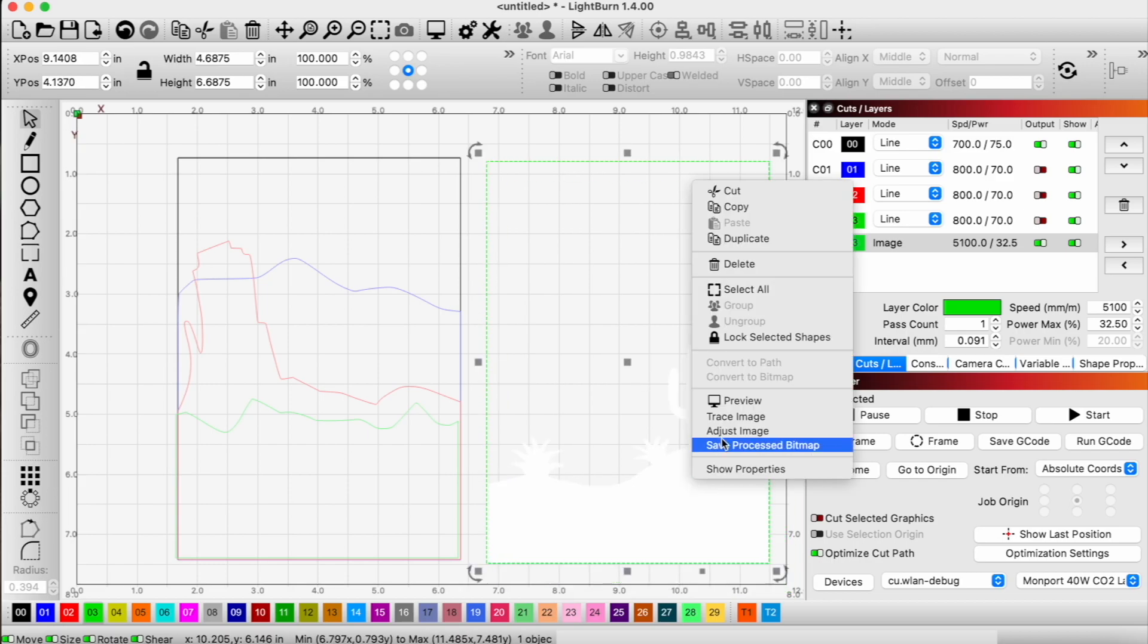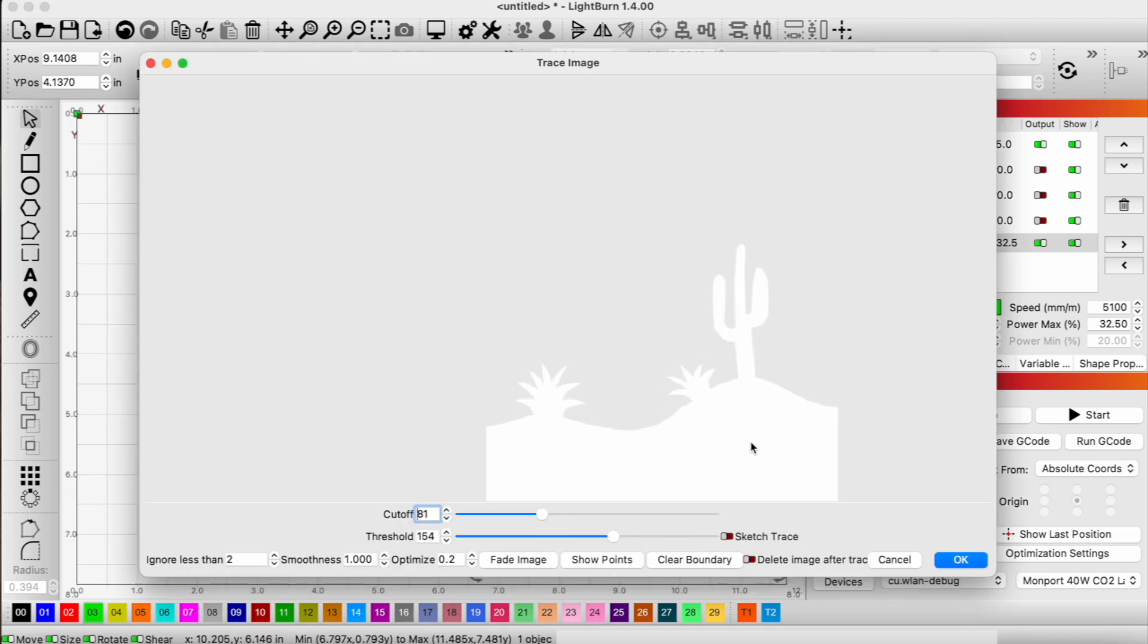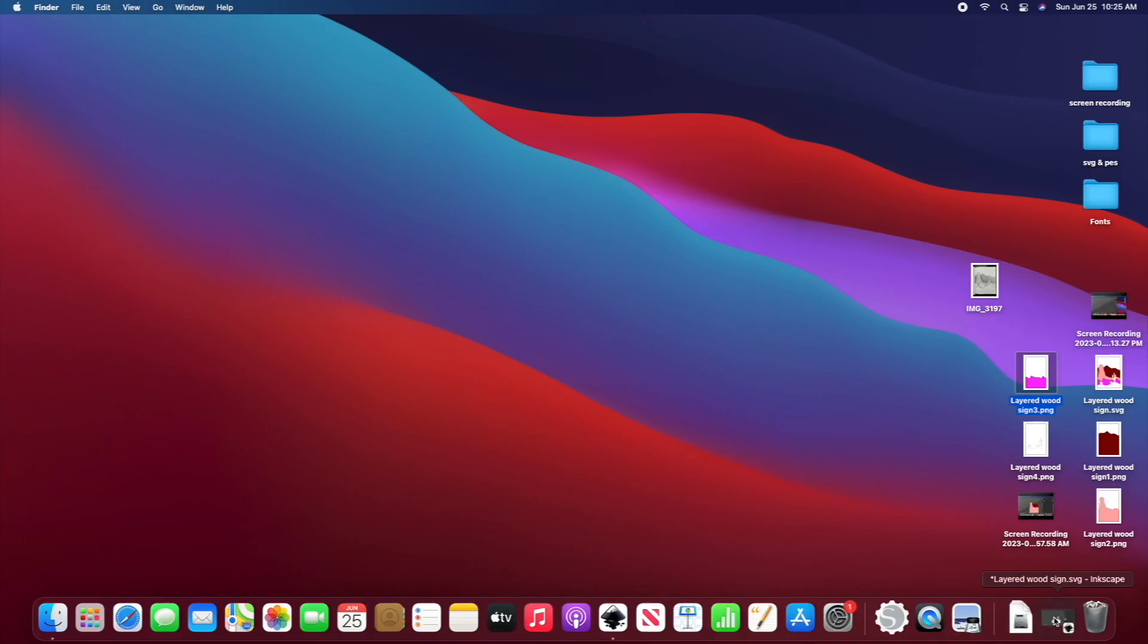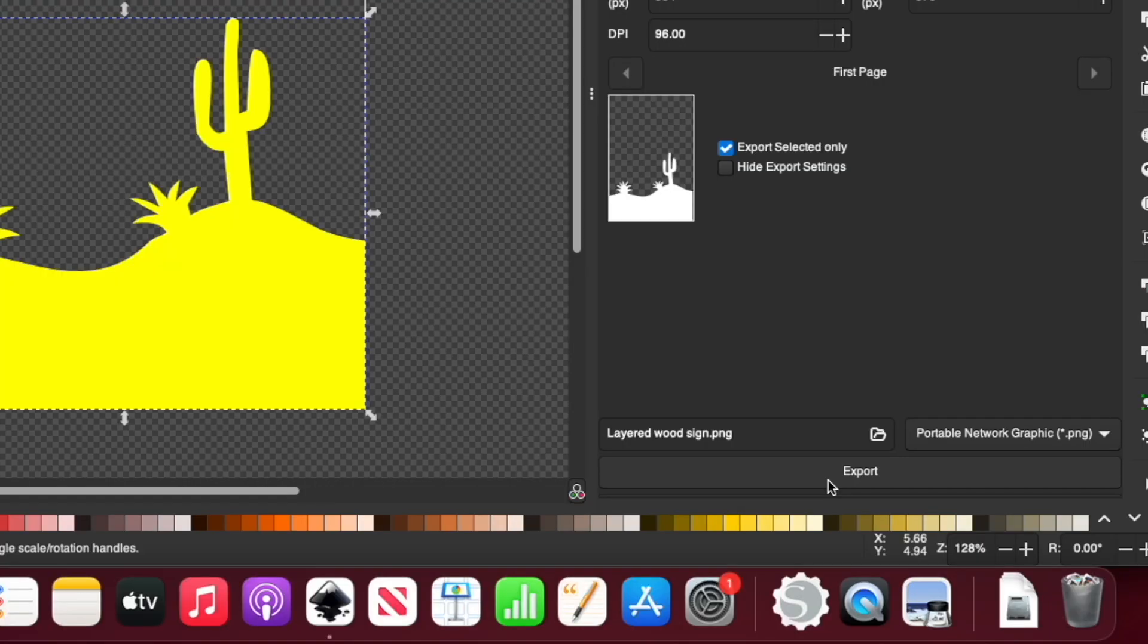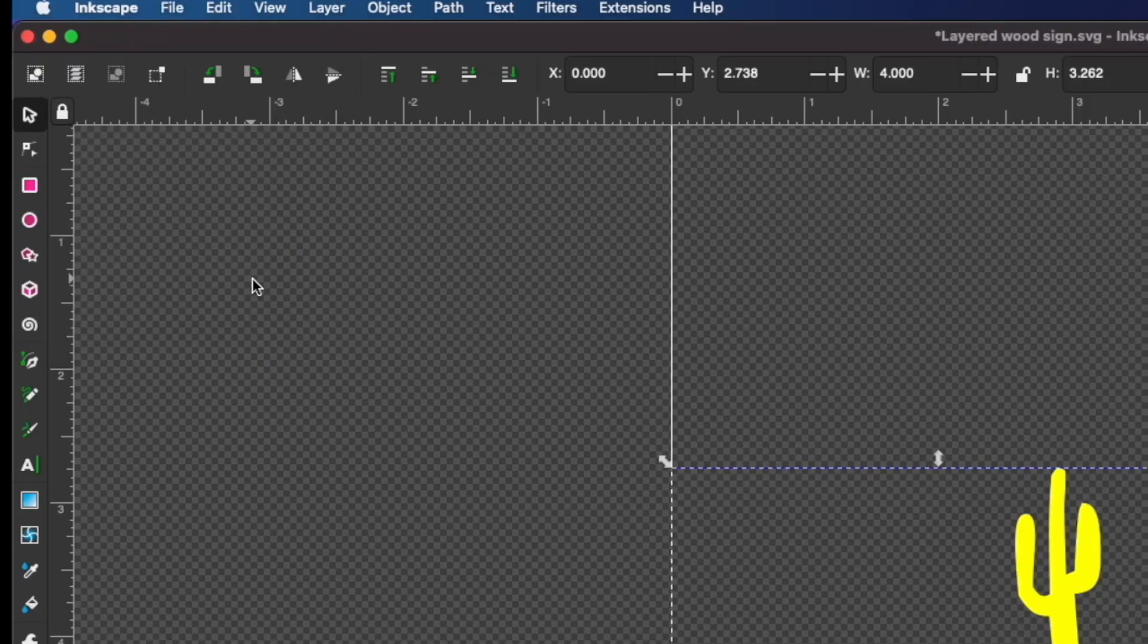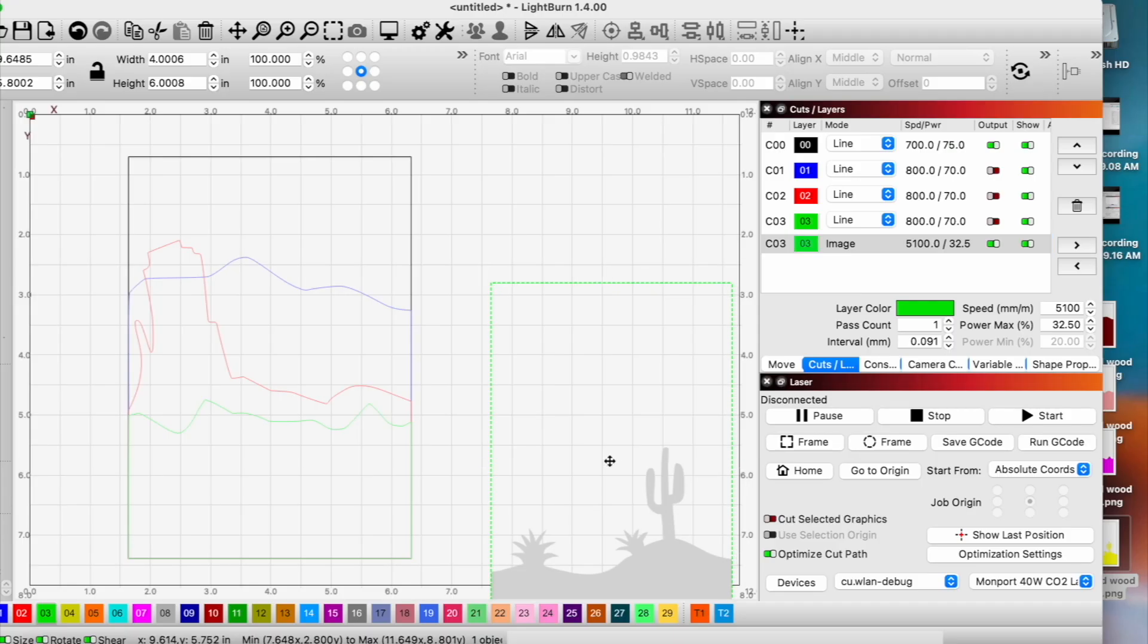This may not work. So what we need to do, because we made this layer white, there's nothing that the tracing tool can use for an outline. Even though we can see it, there's no contrast, so we need to go back into our design, our SVG, and change this color into something usable. There we go, that'll work a lot better.